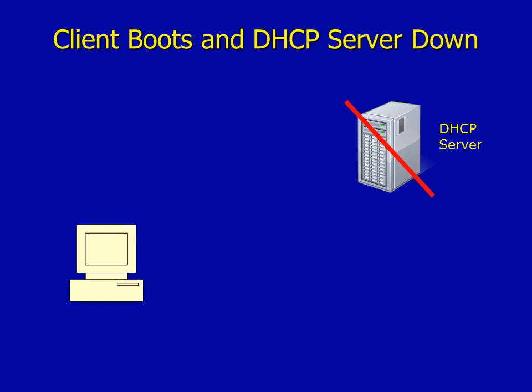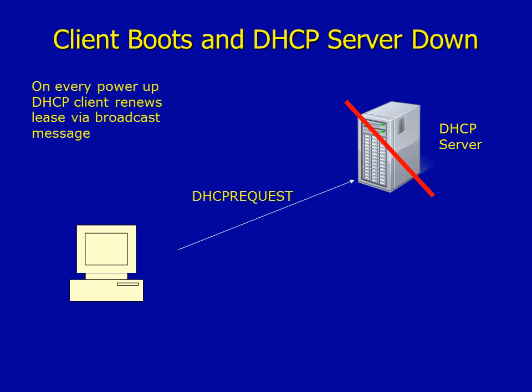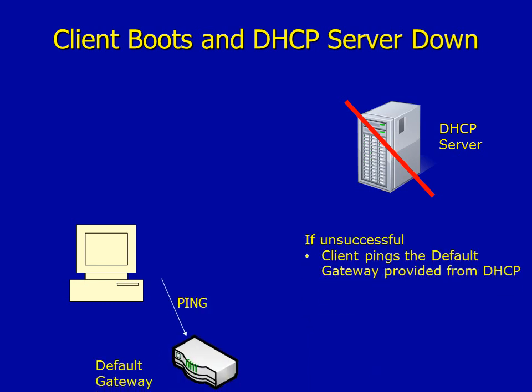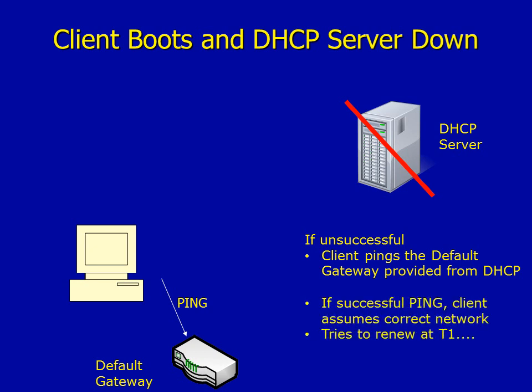This is the scenario where the client boots and the DHCP server is down. The client sends out a broadcast DHCP Request. If there's no response, the client pings the default gateway that was originally provided by the DHCP server. If the ping is successful, the client assumes it's on the correct network and continues using its current IP address, but will still try to renew at T1 and go through that normal process.